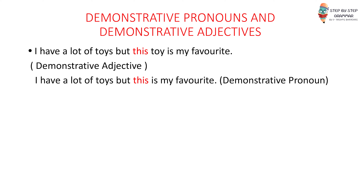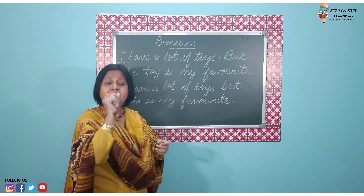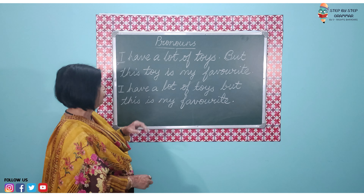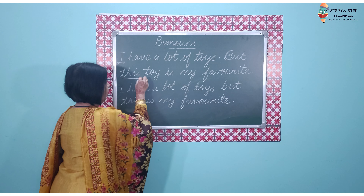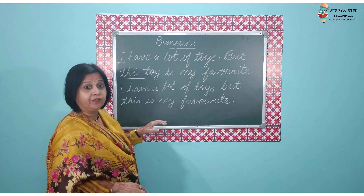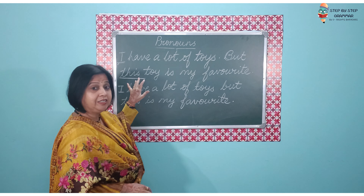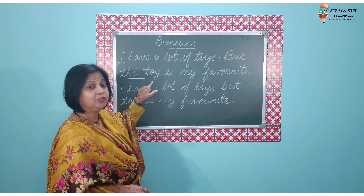I have these two sentences written. First: I have a lot of toys, but this toy is my favorite. Second: I have a lot of toys, but this is my favorite. The very first time when we read them, they both look the same, they both sound the same, but there is a little difference. In the first sentence: I have a lot of toys, but this toy is my favorite — the word 'this' used over here, this is qualifying the toy.